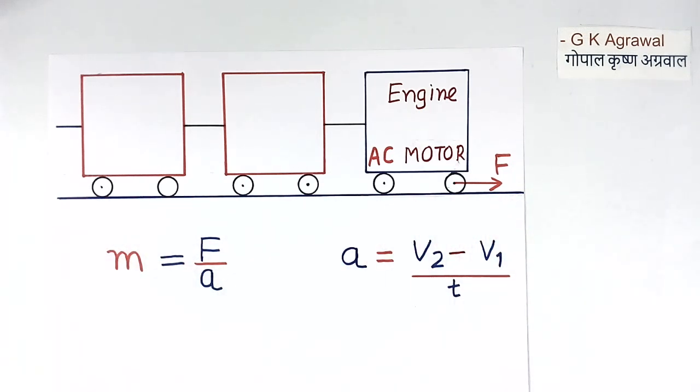When the train starts from the station, after starting, a known force is applied in the wheel. So force is known by the control system. Because of this force, the train will start moving. Then this control system measures the velocity V1, V2, and time T.